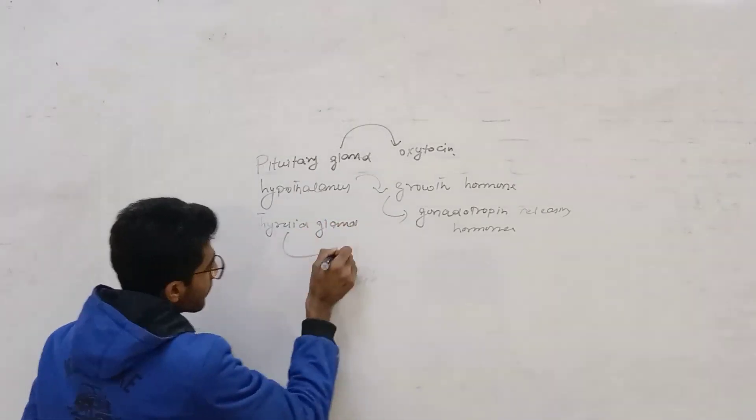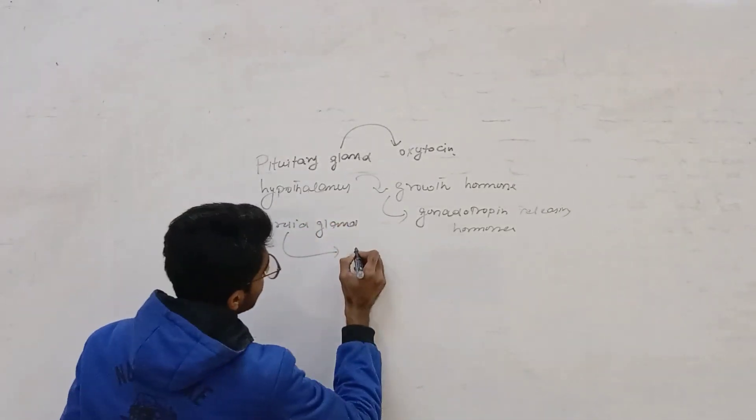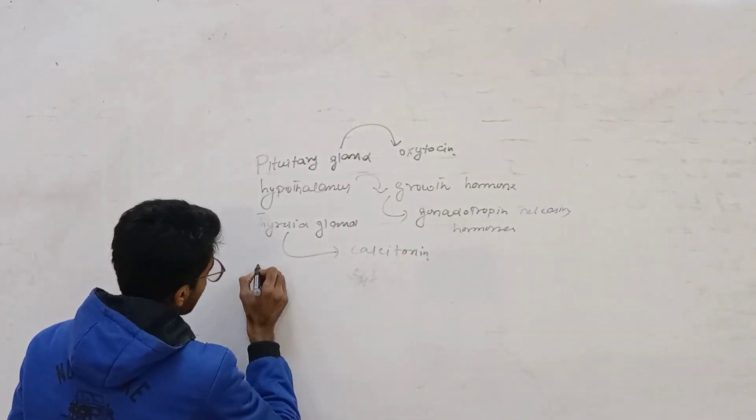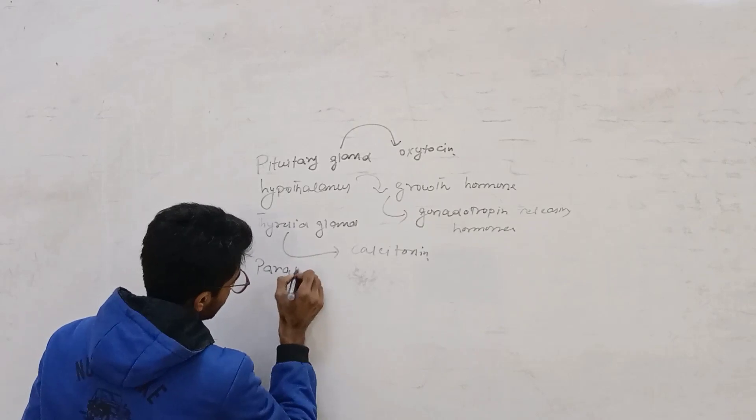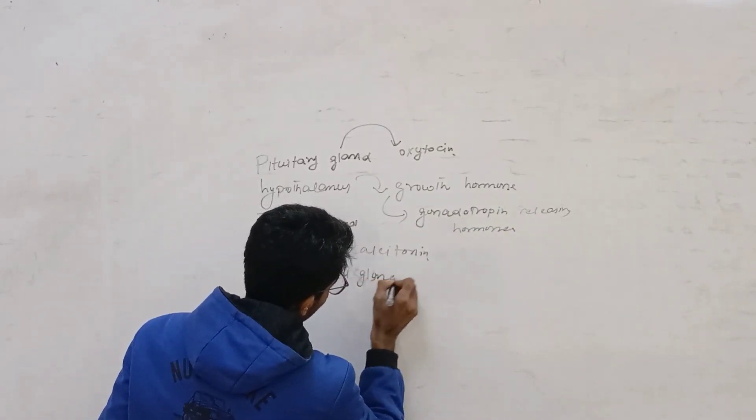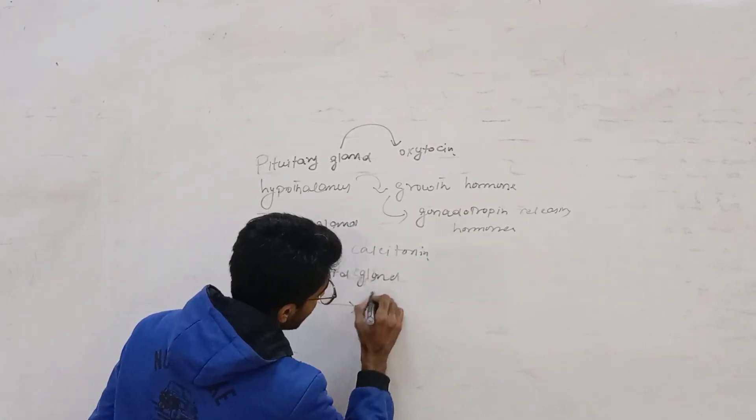The thyroid gland secretes calcitonin hormone. The parathyroid gland releases parathyroid hormone.